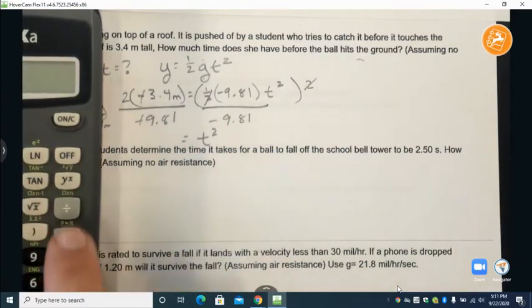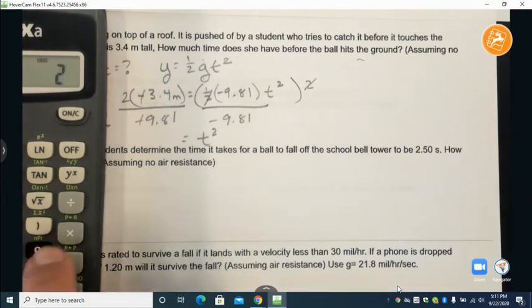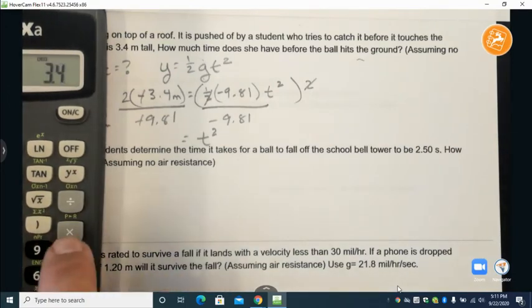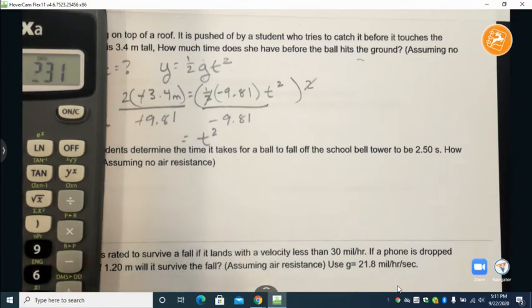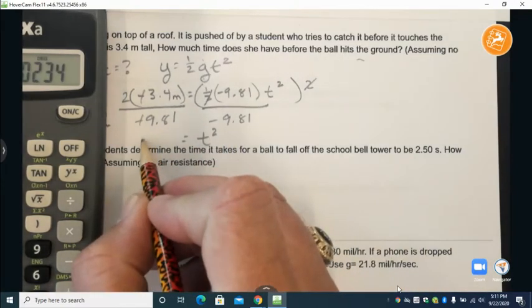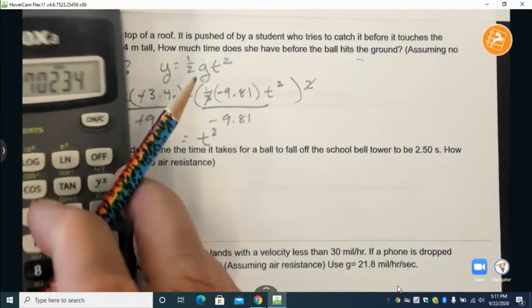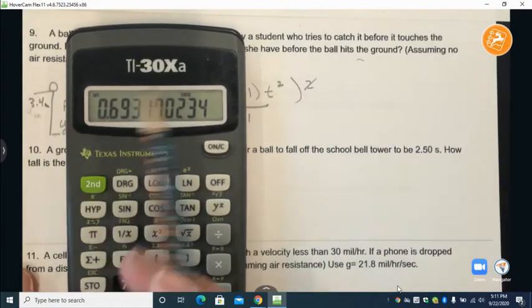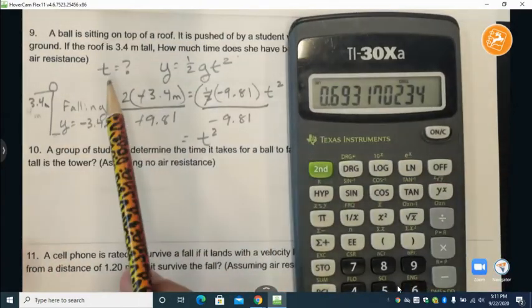So we'll go 2 times 3.4 divided by 9.81 equals 0.693. So this is the combination of this math.